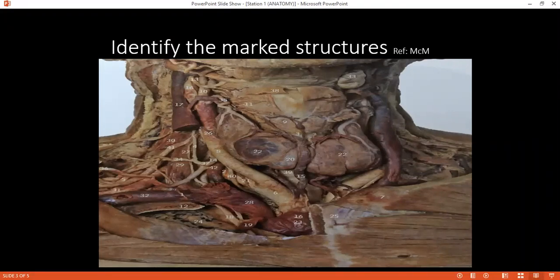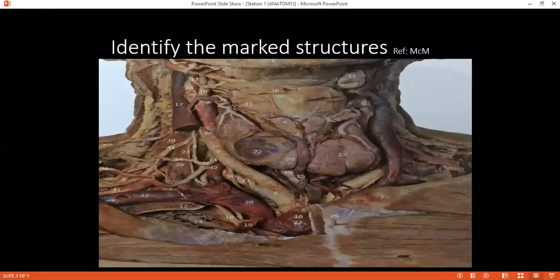Examiner: Can you please tell me what is the blood supply of the parotid gland? Student: The parotid gland receives its supply from the branches of the external carotid artery within the gland, and venous drainage to the retromandibular vein.